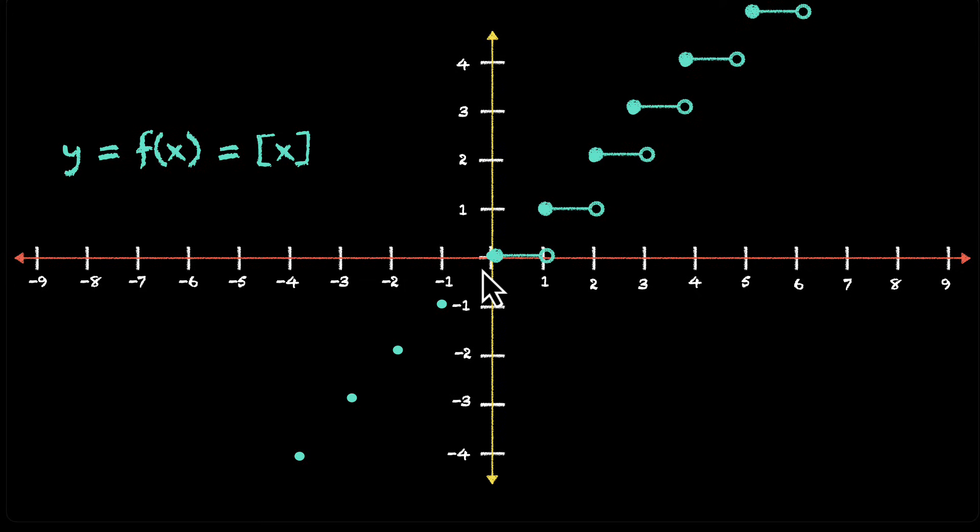This also works in the other direction. For values between minus 1 and 0, because we're rounding down, we'll go down to minus 1. And the pattern continues. This is what we get as the graph of y = [x].